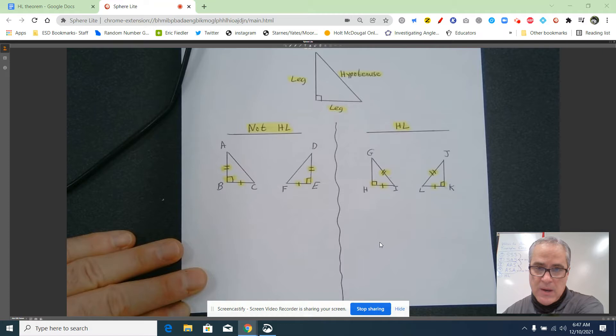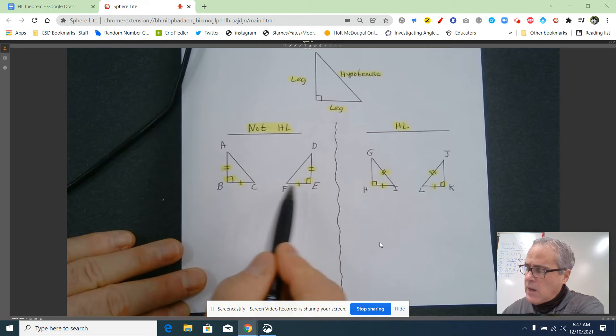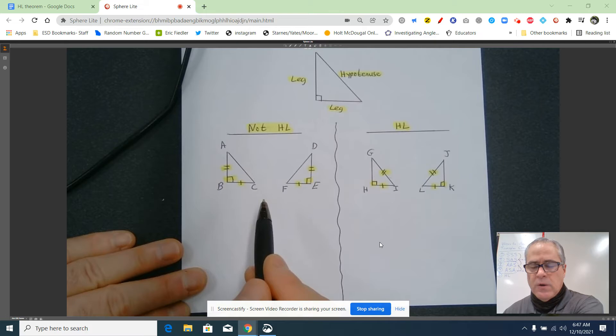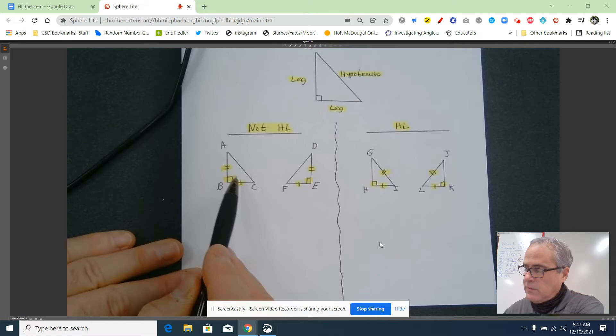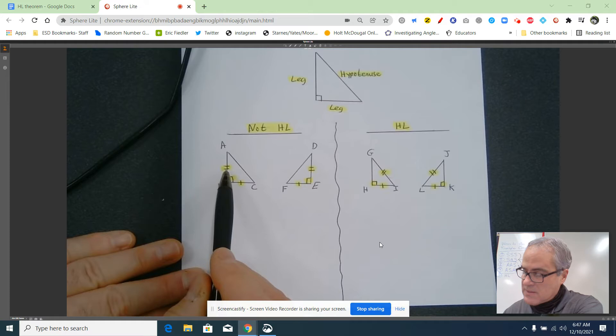So they're not congruent by the hypotenuse leg theorem, but are they congruent? Well, take a look. We have four other ways to show triangles are congruent. One of them has an angle included between the other two sides, and in both these cases, it is. So this is actually side-angle-side congruency.